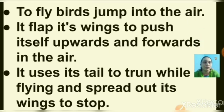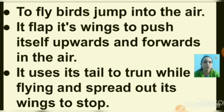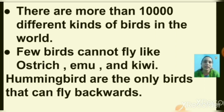How do birds fly? To fly, birds jump into the air — this is the first step. It flaps its wings to push itself upward and forward in the air. It uses its tail to take a turn while flying, and spreads out its wings to stop. There are more than 10,000 different kinds of birds in the world. Few birds cannot fly, like ostrich, emu and kiwi. Hummingbirds are the only birds that can fly backwards.